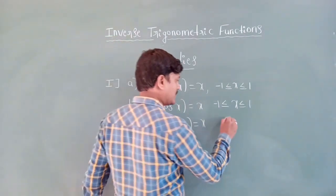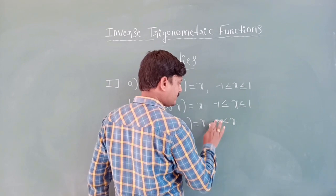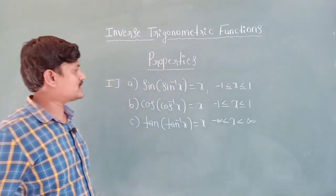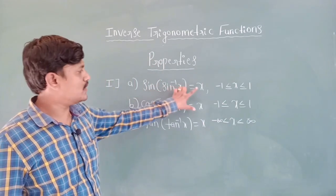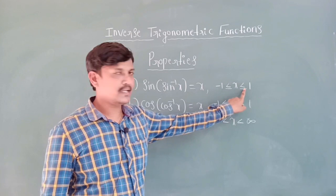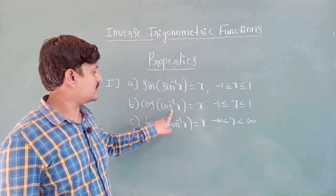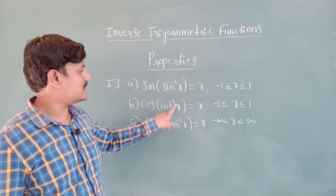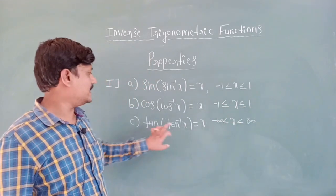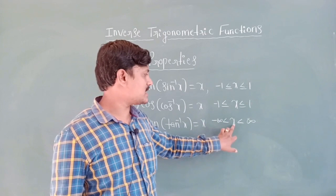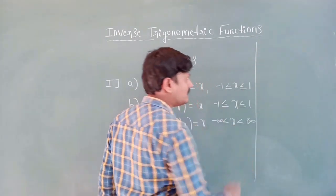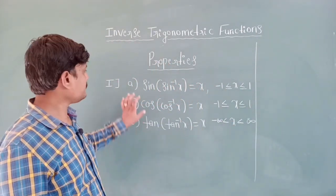R means real number, meaning from minus infinity to plus infinity. So tan(tan⁻¹ x) = x for any real number x. To summarize: sin(sin⁻¹ x) = x when x is between minus one and one; cos(cos⁻¹ x) = x when x is between minus one and one; tan(tan⁻¹ x) = x when x is between minus infinity and plus infinity.